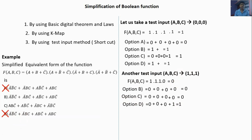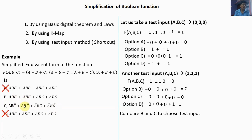Choose another test input and compare options B and C. Option B has A bar B bar C bar — the same term A bar B bar C bar is present in option C. But A bar B C bar is present in B and there is no A bar B C bar in option C. So select the test input where A bar is 1, B is 1, C bar is 1 — that means A = 0, B = 1, C = 0. Then only you will get the term A bar B C bar value as 1.